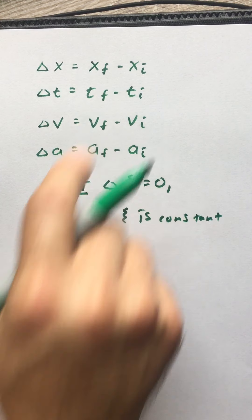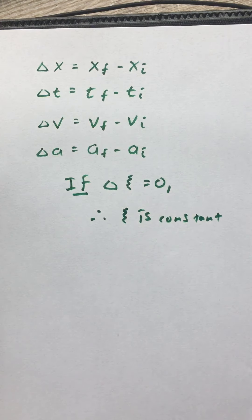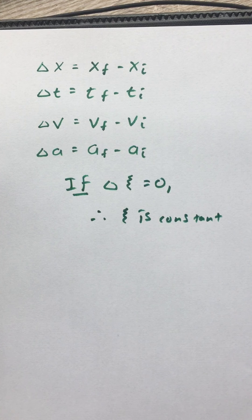V could be constant. T could be constant. X could be constant. Although T being constant doesn't make a whole lot of sense because that doesn't have a whole lot of bearing on the physical universe. If T is constant, then you didn't look at it for any time at all. So it doesn't make a lot of sense.